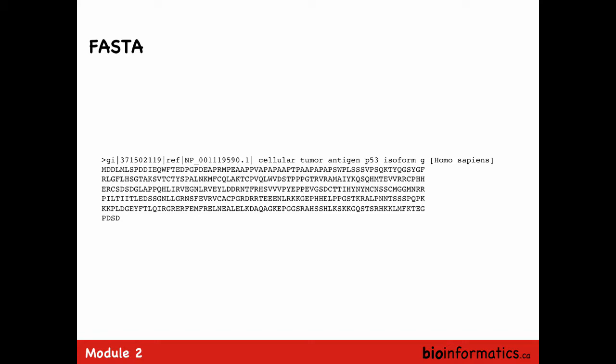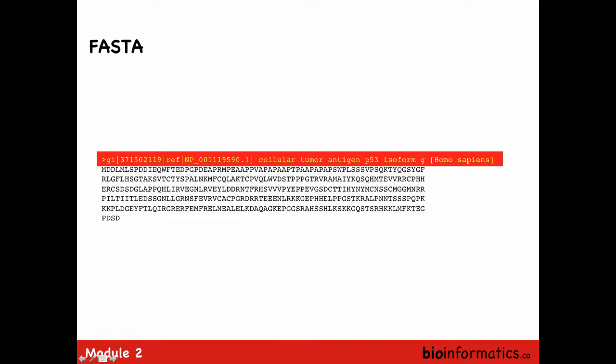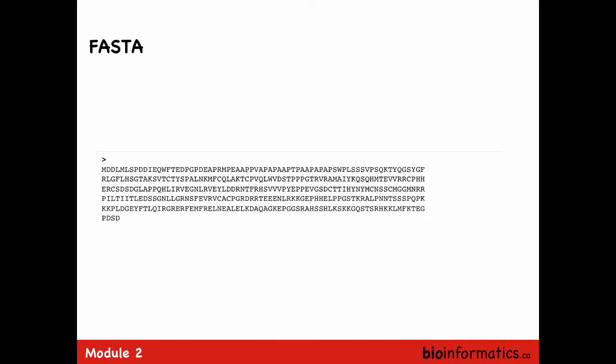This is a FASTA format, which you should all be familiar with. A good FASTA file has information in the header about the accession number and reference — for example, we can see this is an NP, so it's in the protein space, with an accession number, version number, and descriptor. This one is for P53 isoform 9 and the organism it's from. Sometimes that information is missing and it's just an arrow — then it's really hard to tell what that sequence is.